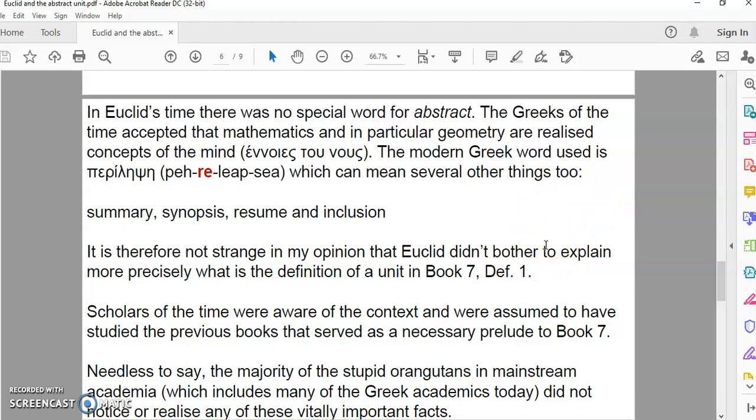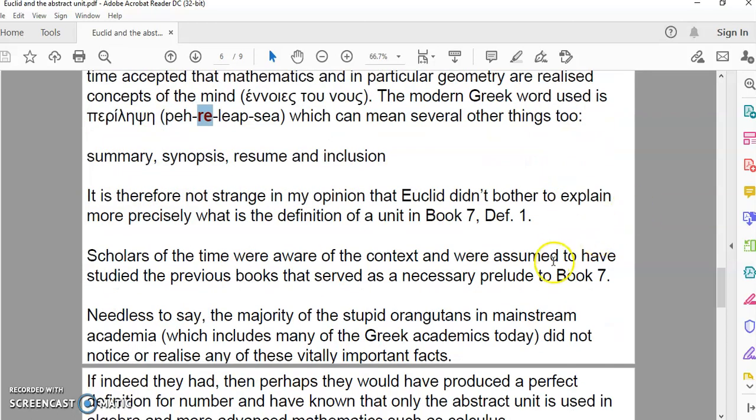In Euclid's time there was no special word for abstract. The Greeks accepted that mathematics and in particular geometry were realized concepts of the mind. The modern Greek word used is perilepsy, which can also mean several other things like summary, synopsis, resume, and inclusion. It is therefore not strange in my opinion that Euclid didn't bother to explain more precisely what is the definition of a unit in Book 7, Definition 1.